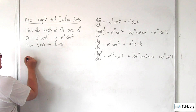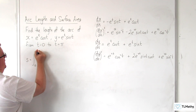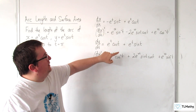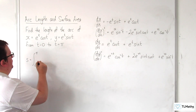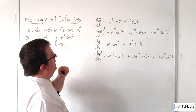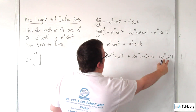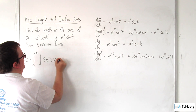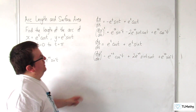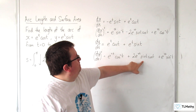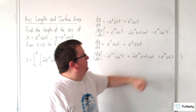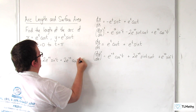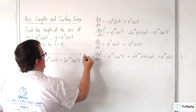The arc length will be the integral from 0 to pi of the square root of (dx/dt)² plus (dy/dt)². Adding these together, the cross terms cancel, and we get the square root of 2e to the 2t sine squared t plus 2e to the 2t cosine squared t, dt.